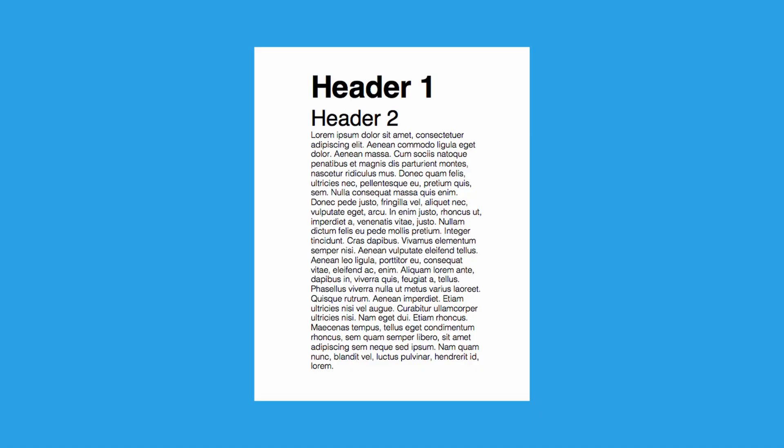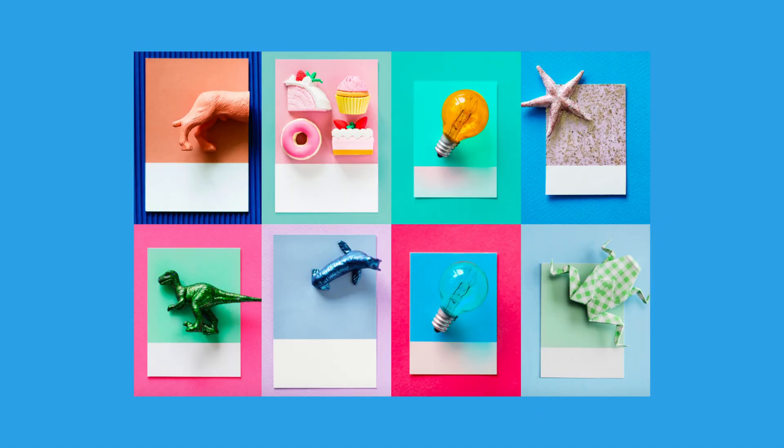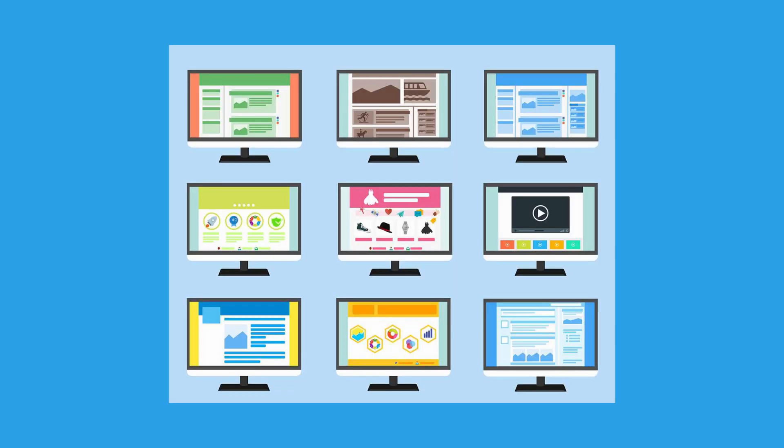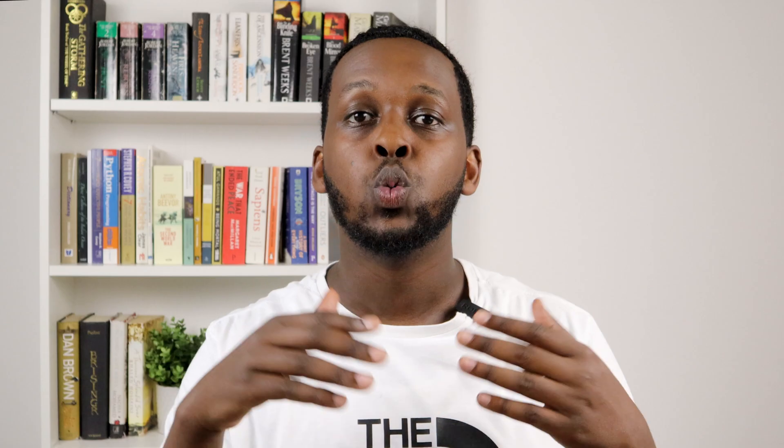The front end deals with everything the user sees in their browser or application. It's the user interface which includes texts, buttons, images, drop down menus, and the list goes on.